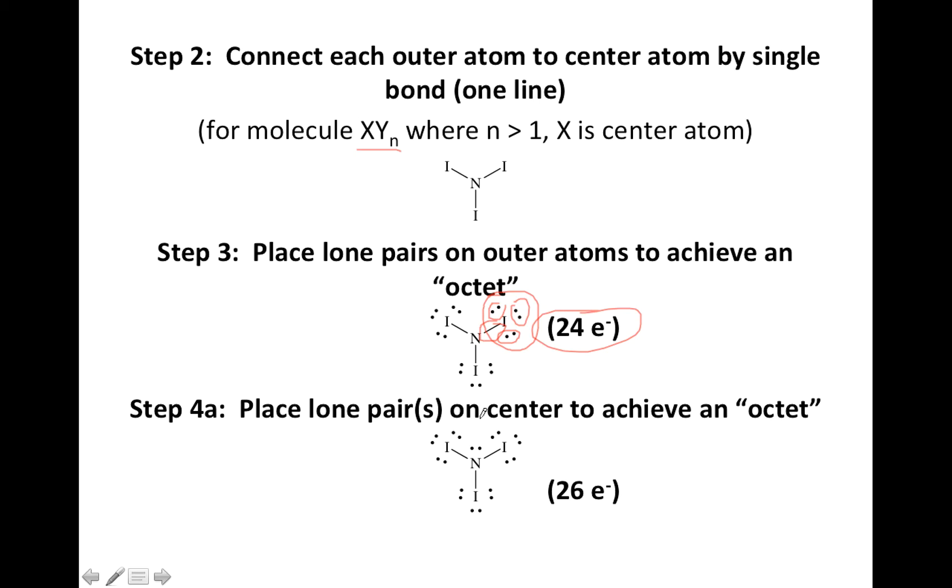Step 4a says simply place the extra electrons as lone pairs on the center to achieve an octet. If you put the extra pair of electrons on the nitrogen, now nitrogen had three lines coming off of it and only had six, and remember our goal is to get eight.